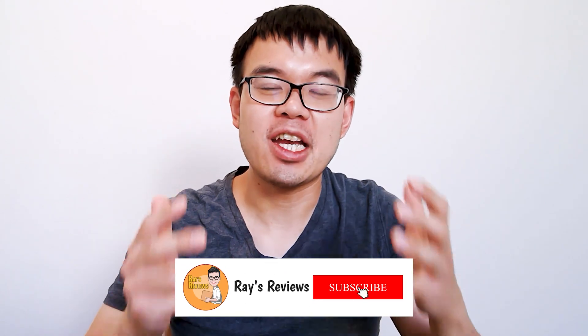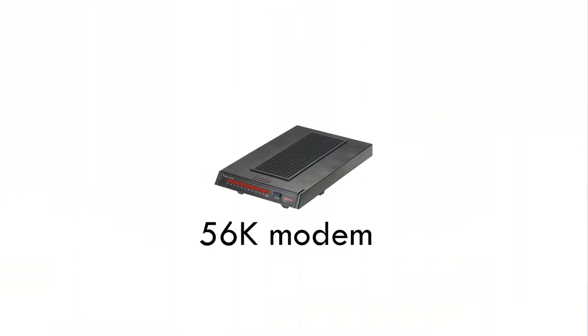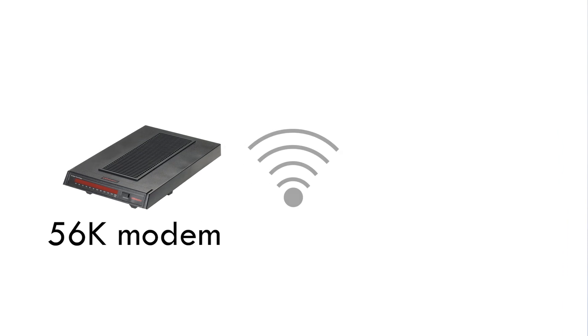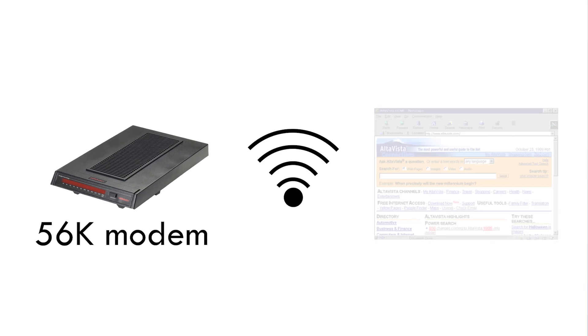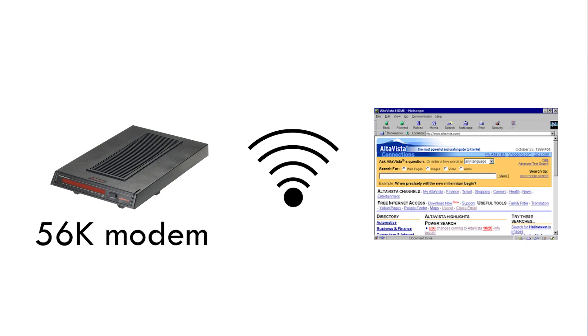Web 1.0 was the beginning of the internet and that era lasted probably between 1989 to 2004. During those days, I myself would have a 56k modem, a dial-up modem, and I would use a free internet service provider such as AOL or AltaVista to go online on my Netscape browser in exchange for companies displaying banner ads on my computer screen. Back then you had a trade-off between making a phone call or going on the internet.